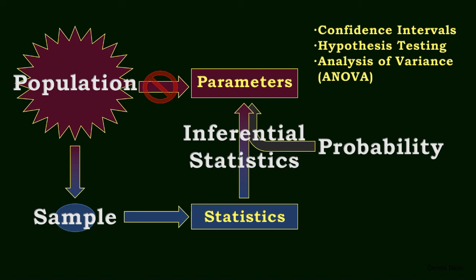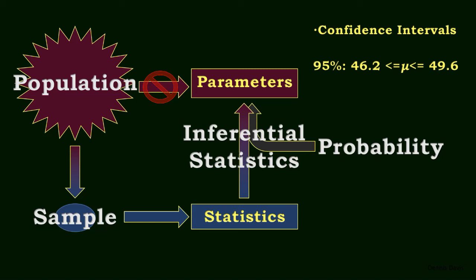With confidence intervals, we are trying to estimate a parameter, often the population mean. We state a range or interval and a level of confidence that the true parameter lies within the range. For example, we can do the math and determine, based on our sample, that we are 95% confident that the population mean lies between 46.2 and 49.6.